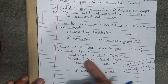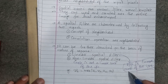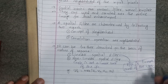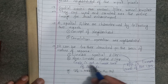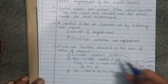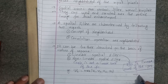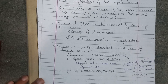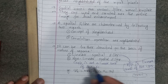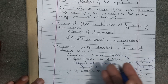Spatial filters are classified as linear spatial filters or non-linear spatial filters. A linear spatial filter produces an output that is a linear combination of the input. A non-linear spatial filter's output is not a linear combination. Examples of linear filters include the mean filter or averaging filter. Non-linear filters include the max filter, min filter, and median filter.